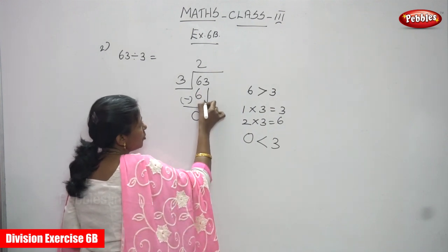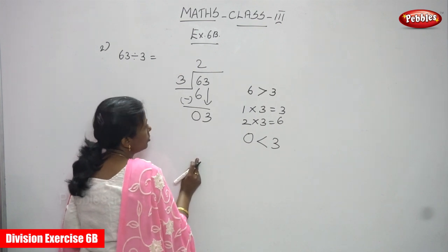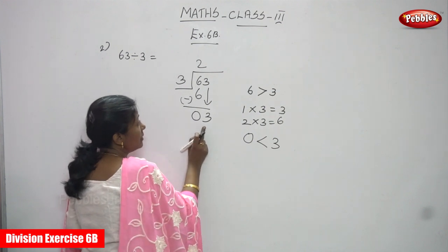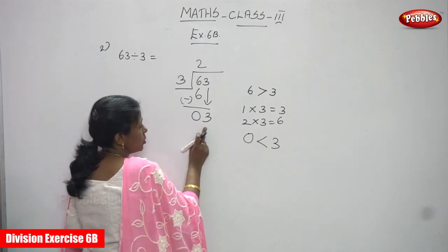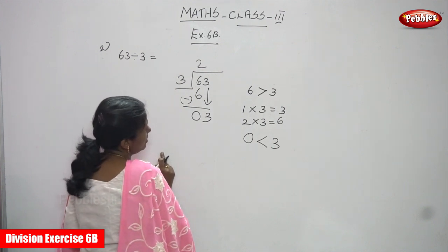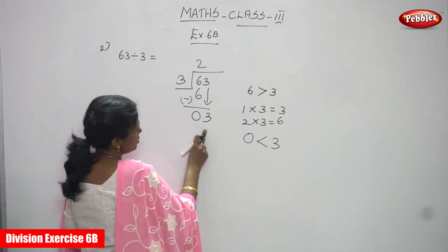You have to bring down the next digit, 3. Now compare 3 with 3. One digit is 3. One digit compared with the divisor, both are similar. So you must start division.